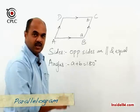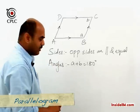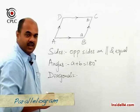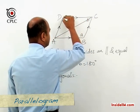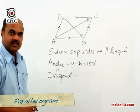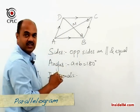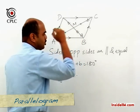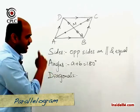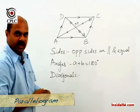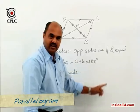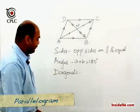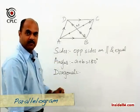With respect to angles: opposite angles are equal and adjacent angles are supplementary. Now let's look at properties with respect to the diagonals. In a parallelogram, if we draw diagonals AC and BD, the property is that diagonals bisect each other, meaning AM equals MC and DM equals MB. To recap: in a parallelogram, opposite sides are parallel and equal, opposite angles are equal, adjacent angles are supplementary, and diagonals bisect each other.